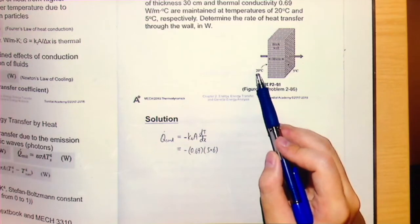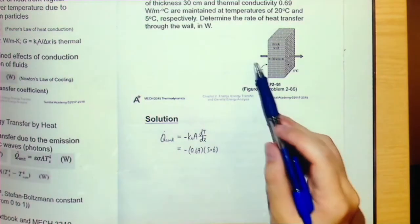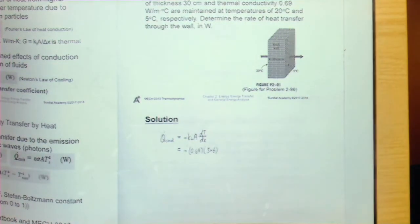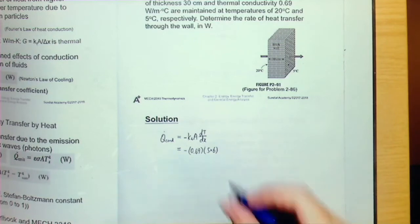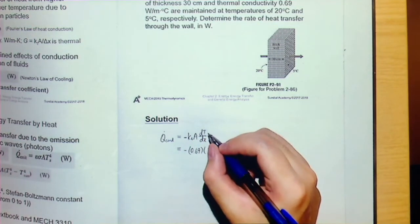Because dT divided by dx is the final temperature minus initial temperature, divided by the final position minus the initial position. But because we know that the thickness of this wall would be 30 cm, so that we will have 5 minus 20 divided by 0.3.